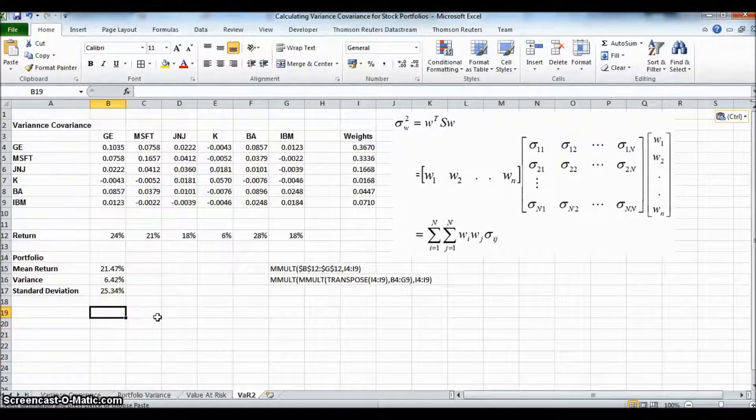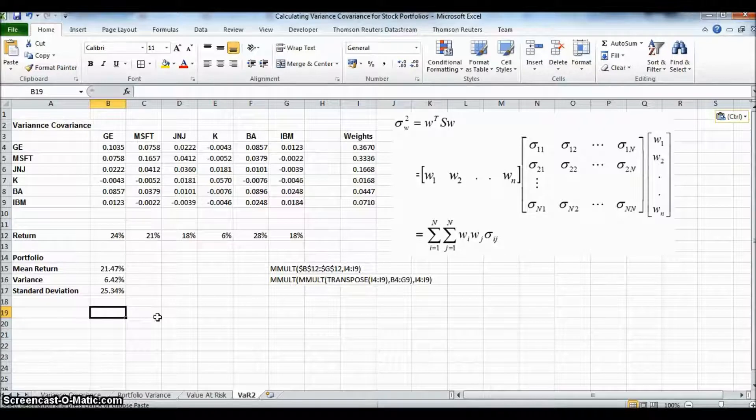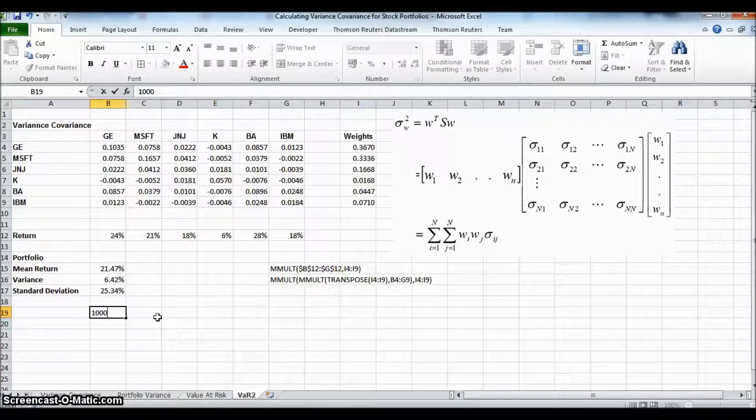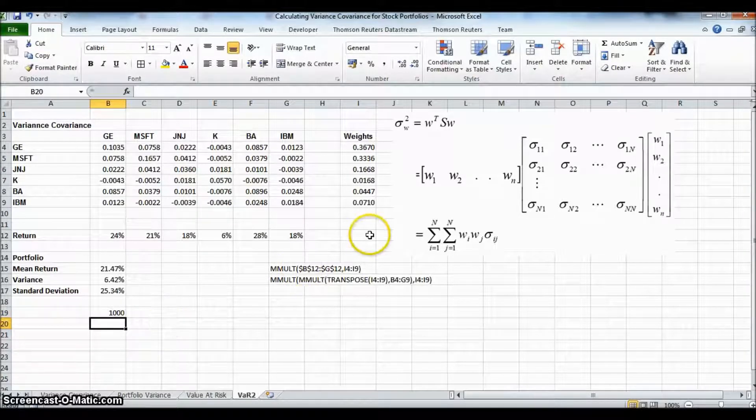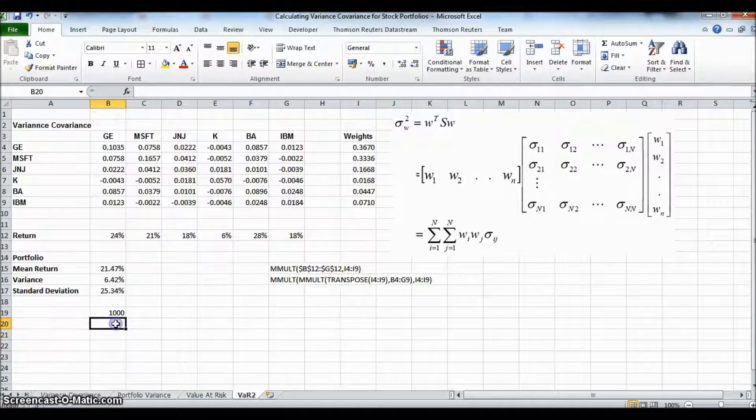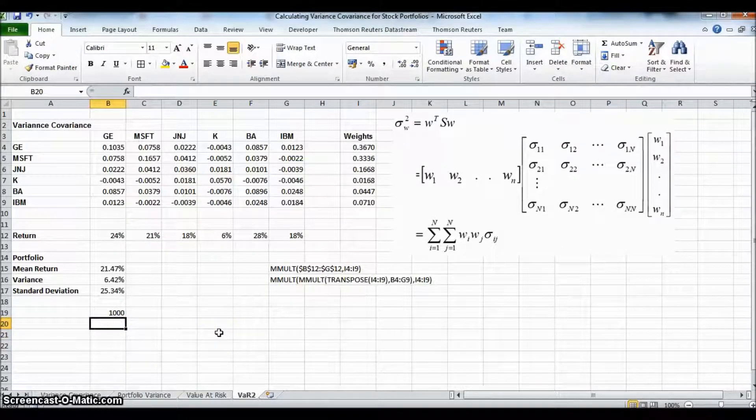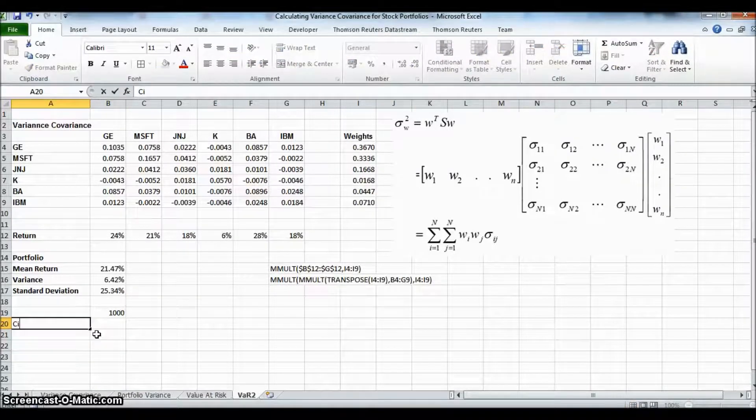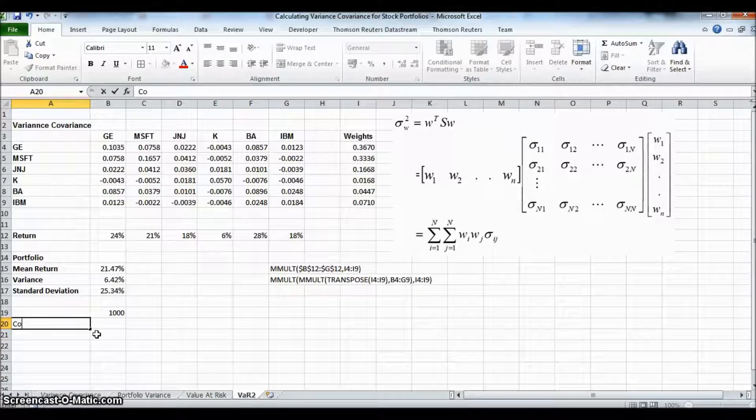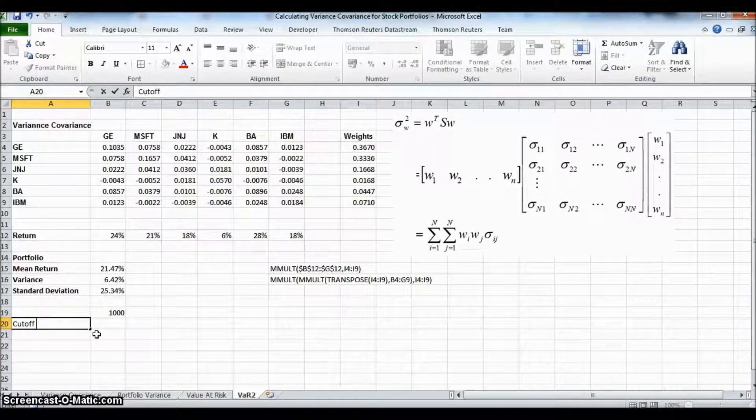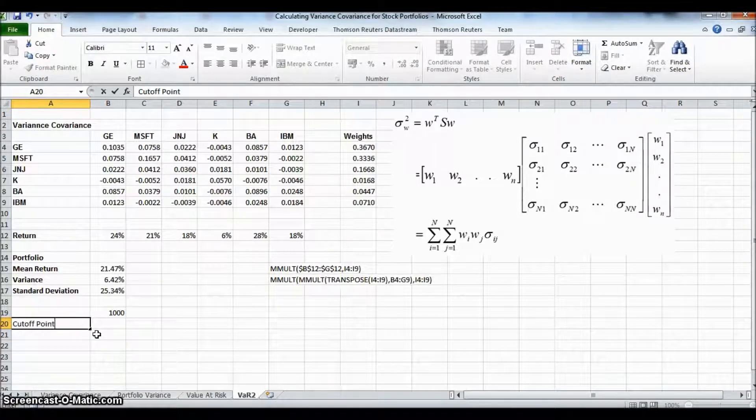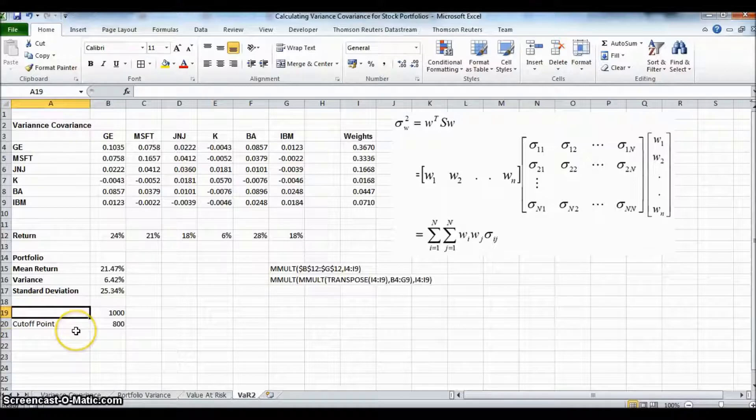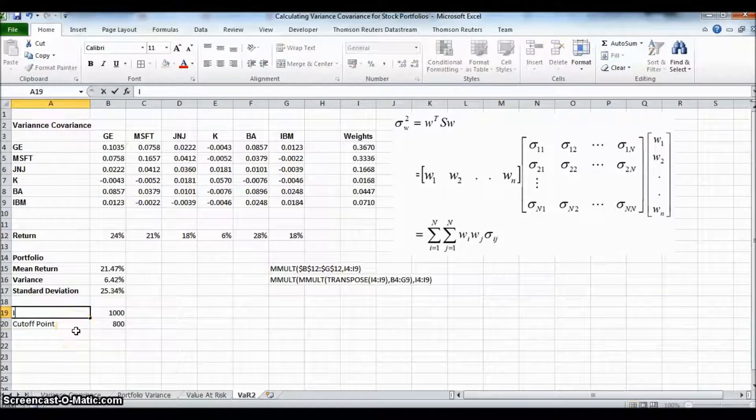We should, if we designate a particular cash amount, could say $100 or $1,000, we could set out the following. We could define a cutoff point, and we'll just initially put it in as $800, and the $1,000 is some kind of initial investment.